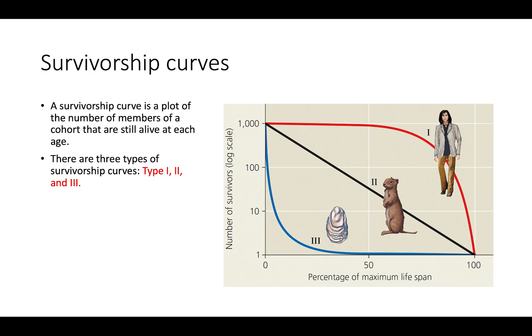In the Type I survivorship curve, we can see that for the majority of the maximum lifespan of Type I organisms, the majority of individuals are going to survive. Then once you near the maximum lifespan is when you really start to see individuals dying off at a more rapid rate.